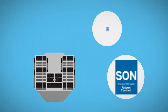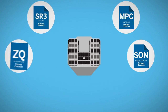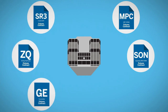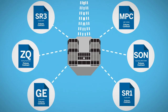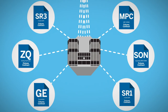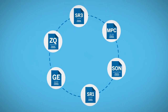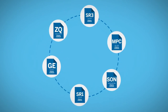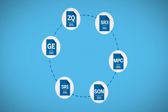Traders will be excited by the prospect of trading SONIA-based futures alongside CME Group's suite of existing US dollar-based interest rate products, because both will clear under the same clearinghouse, thus allowing for margin offsets resulting in greater capital efficiency. Additionally, the SONIA contracts can be used for spreading opportunities against SOFR, Eurodollar and Fed Fund futures.